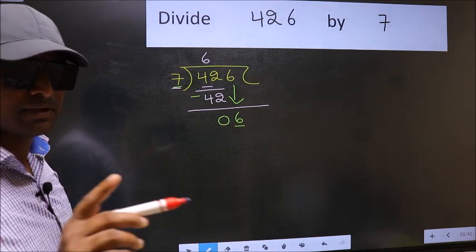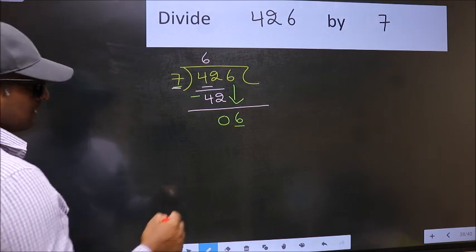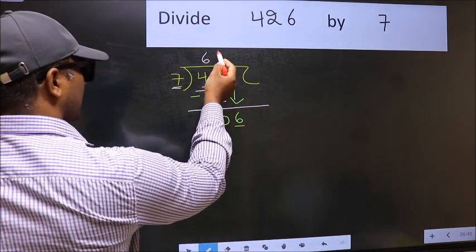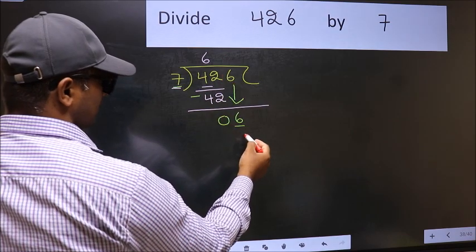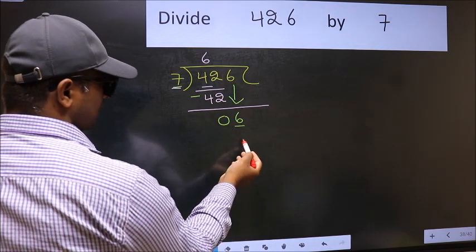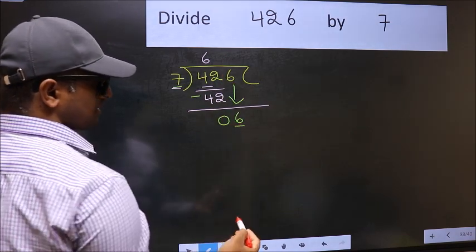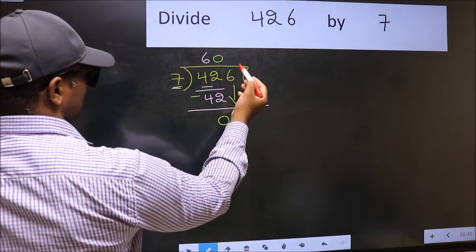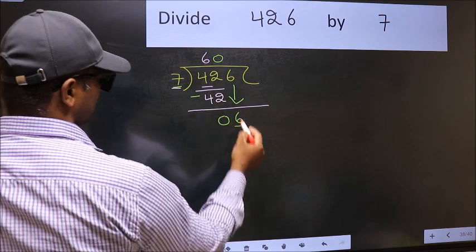Instead, what you should think of doing is, what number should we write here. If I take 1, we will get 7. But 7 is larger than 6. So what we should do is we should take 0. So 7 into 0, 0.